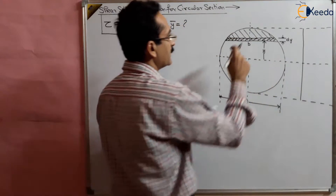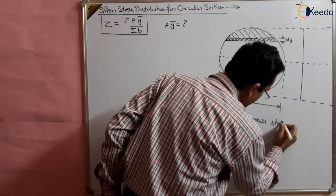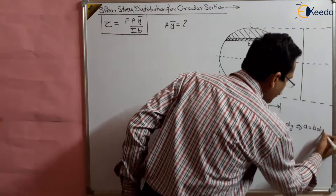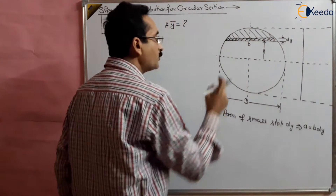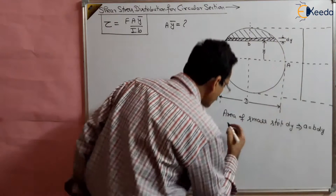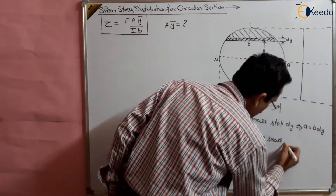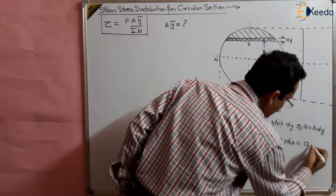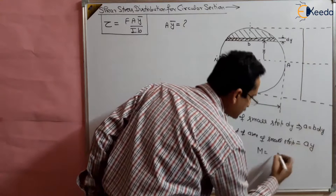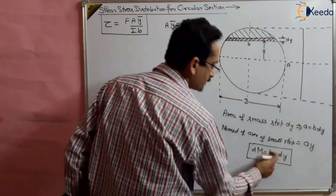The area of the small strip is B·dy. The moment of this area about the neutral axis is area multiplied by y, so moment of the small strip is B·y·dy. Integrating this from y to capital R, we can get the total moment of area Aȳ. So Aȳ equals the integral from y to R of B·y·dy.